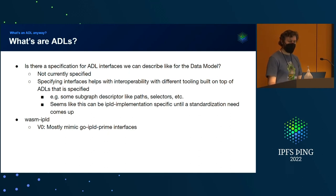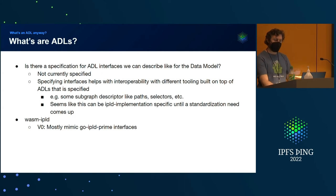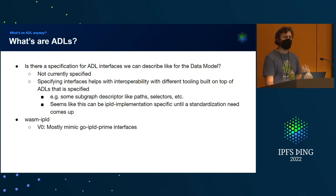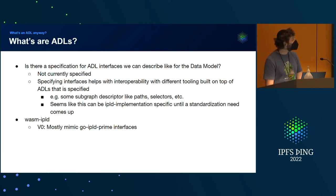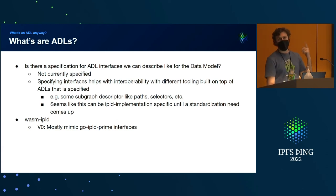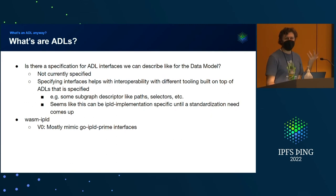There is no specification for ADLs the way we can describe the data model. Specifying helps in some places — in a subgraph descriptor like selectors or paths, there are things that imply an interface should be there. Pathing implies I need to be able to do a get on a map element and walk through it. Selectors also have more expressive query parameters that imply your implementation may need to support more types of functions. I think this can just be implementation-specific until we find the need for standardizing these functions.